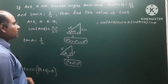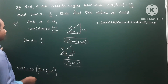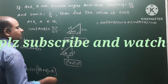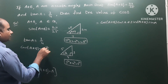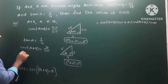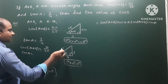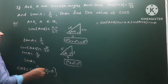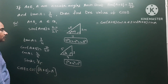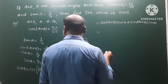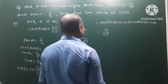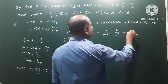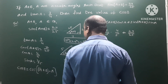From the triangle for angle (A+B): cos(A+B) = adjacent side by hypotenuse = 7/25. From the triangle for angle A: cos(A) = adjacent side by hypotenuse = 4/5, and sin(A) = opposite side by hypotenuse = 3/5. Substituting: cos(B) = cos(A+B)·cos(A) + sin(A+B)·sin(A) = (7/25)·(4/5) + (24/25)·(3/5).